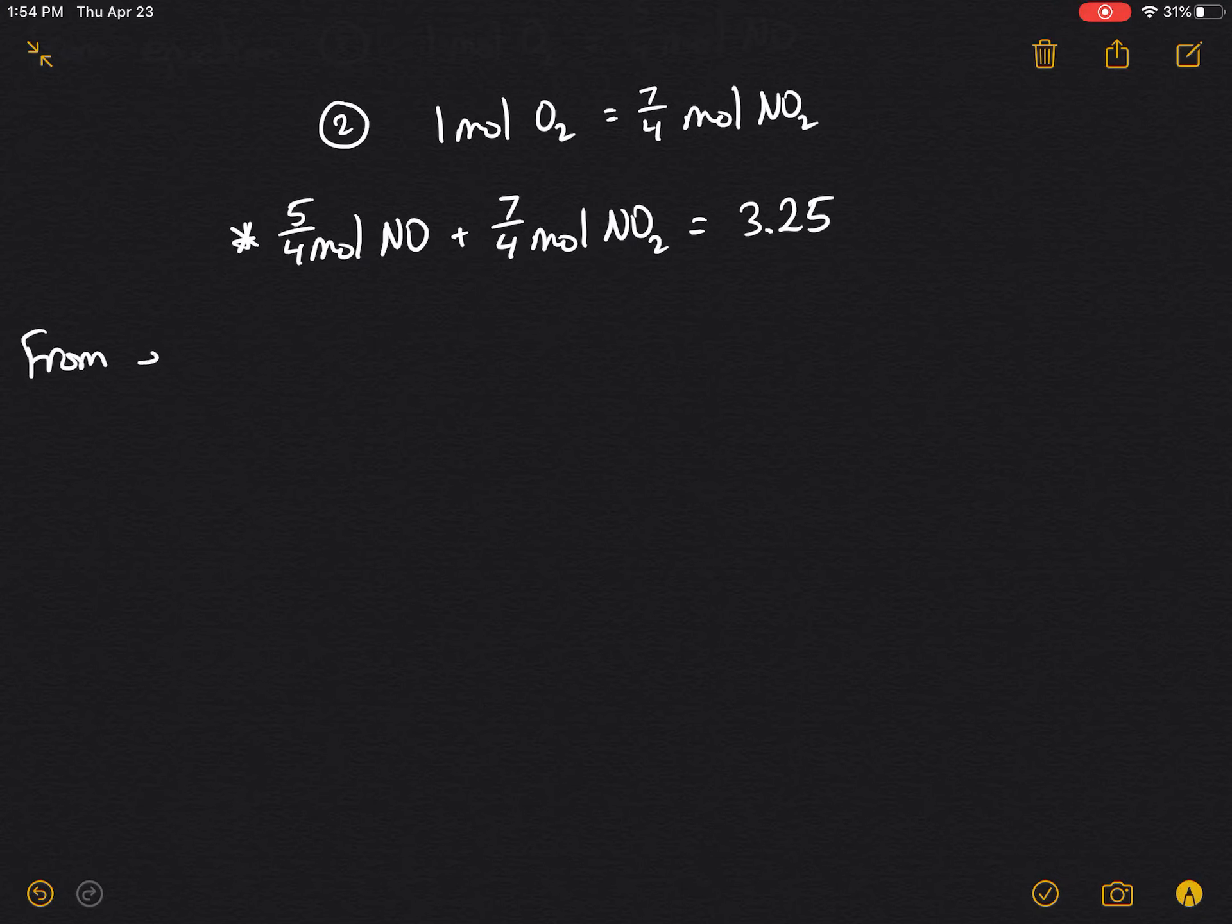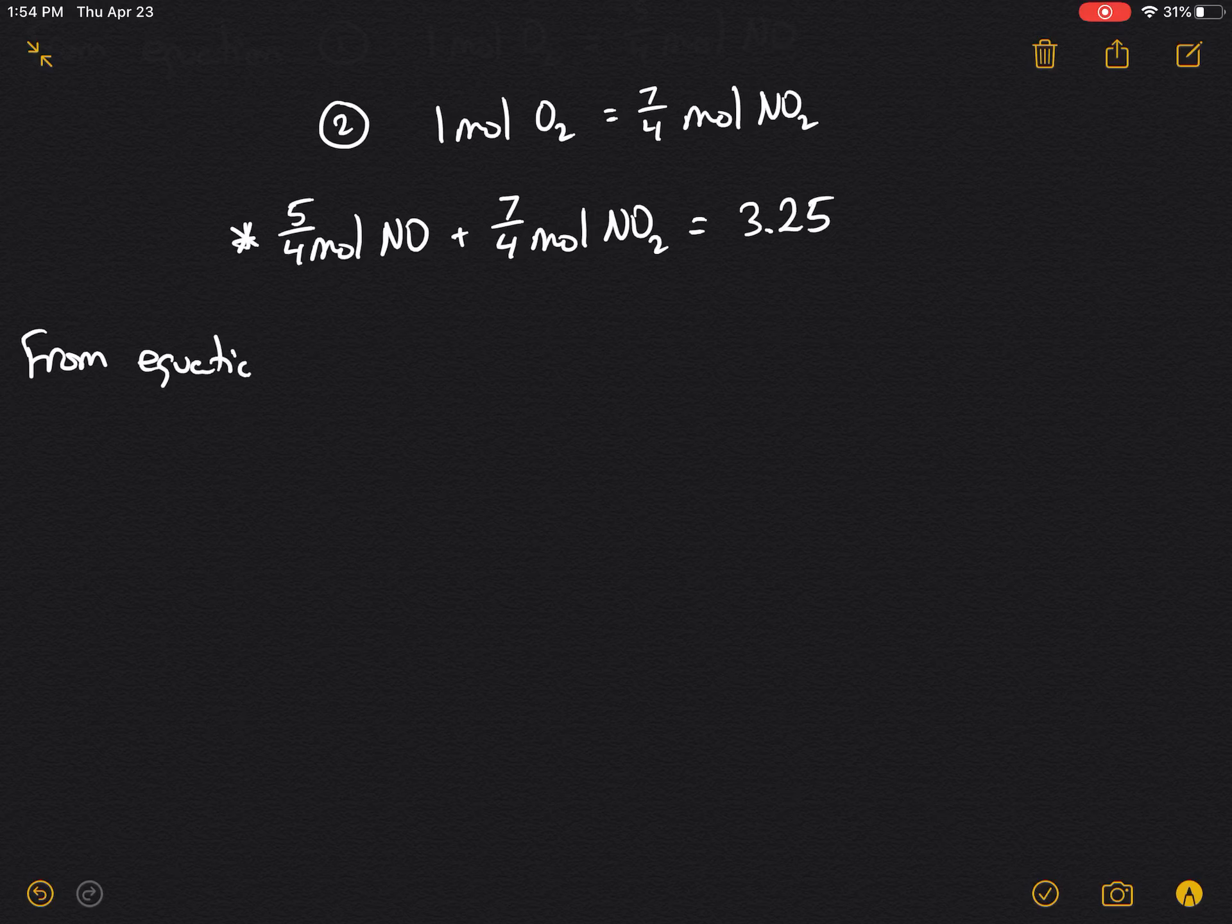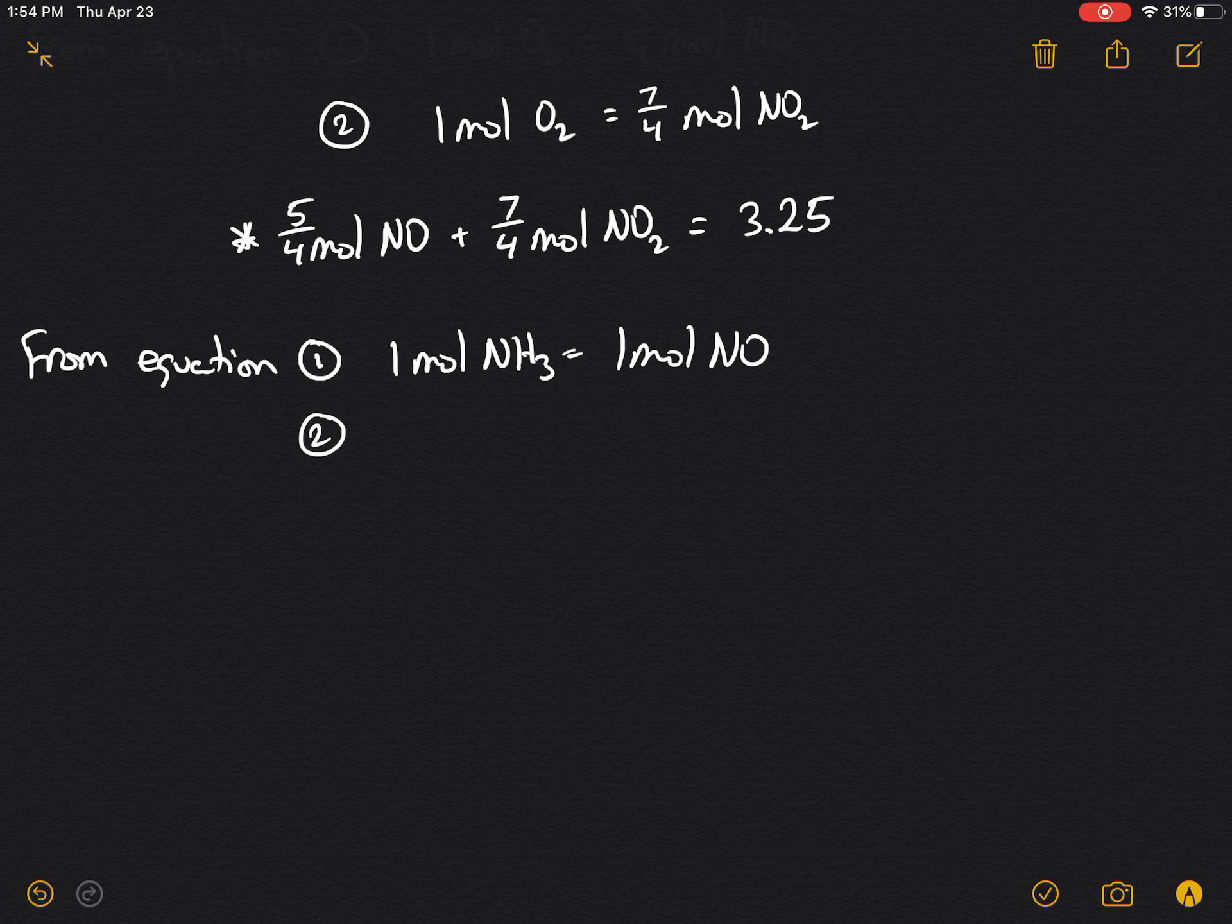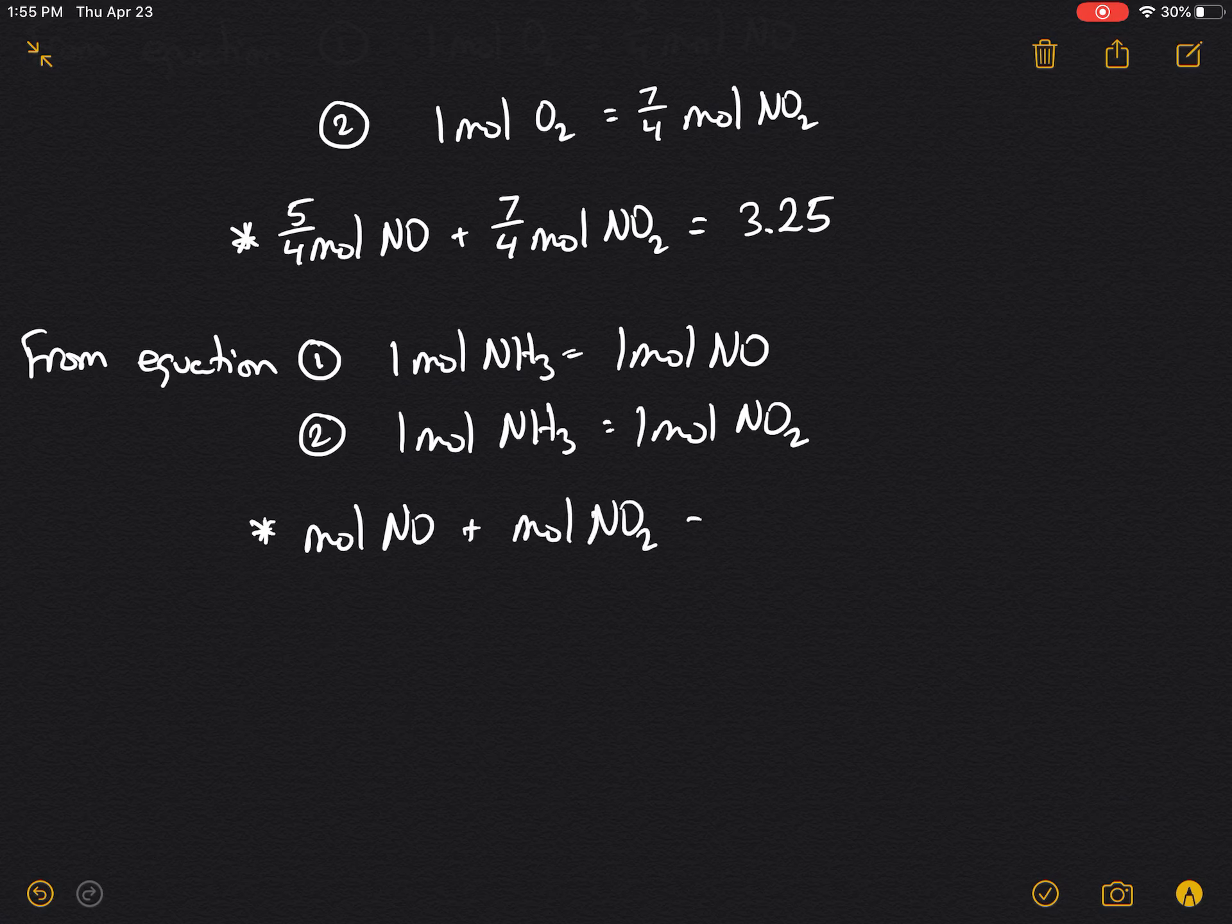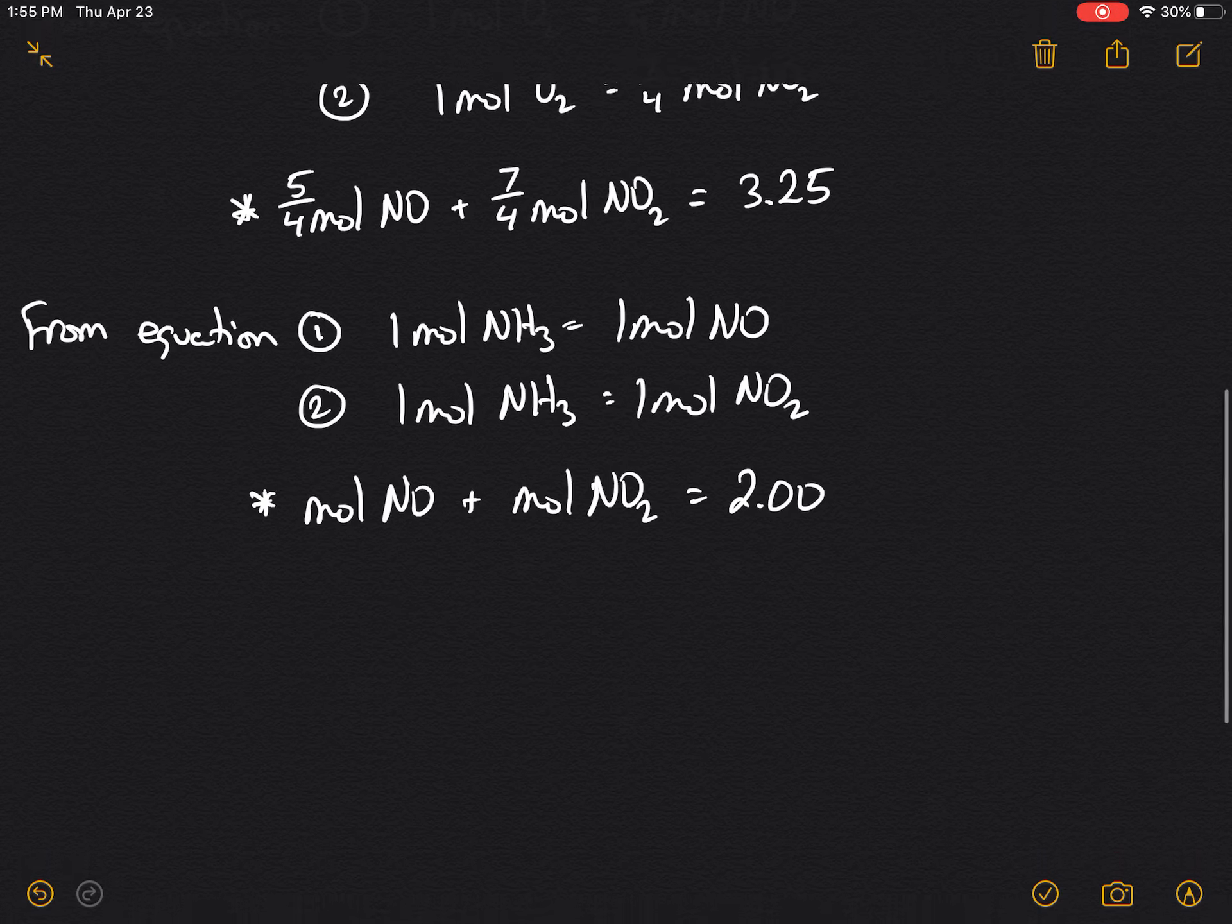Let's set up another relationship. So from equation 1, 1 mole of NH3 is equal to 1 mole of NO. And from equation 2, 1 mole of NH3 is equal to 1 mole of NO2. So we can set up another relationship here that the mole of NO plus the mole of NO2 is equal to 2.00, which is the starting amount of NH3.